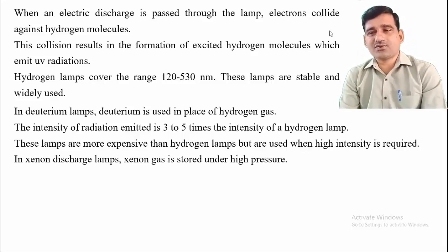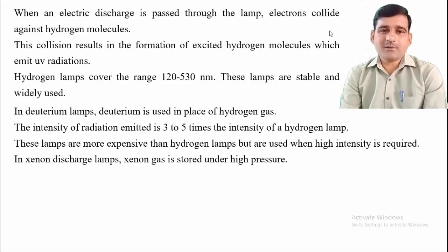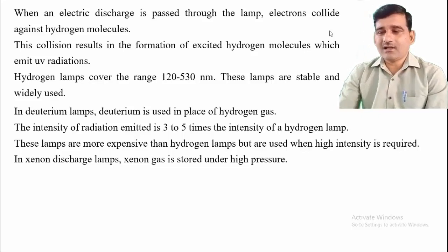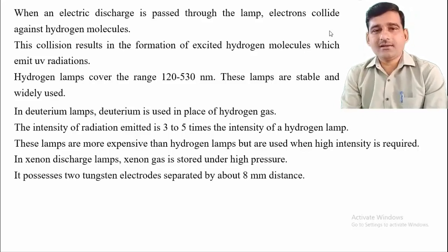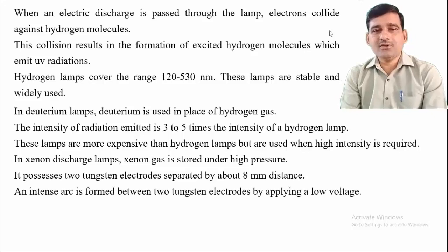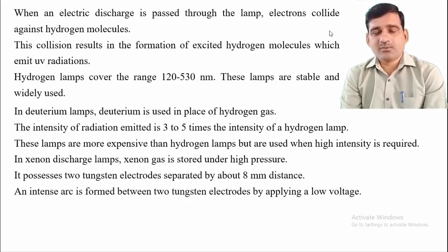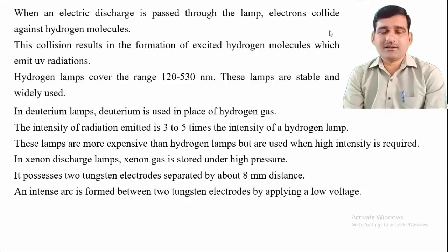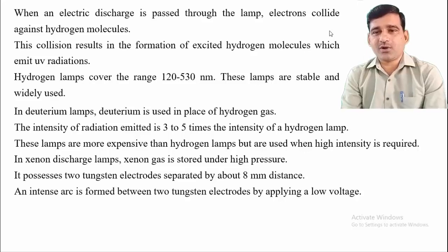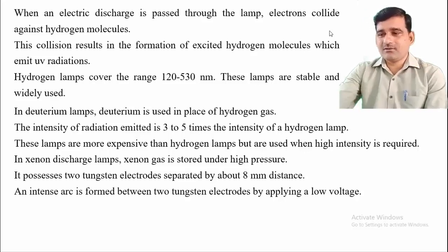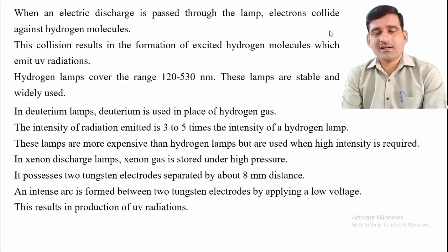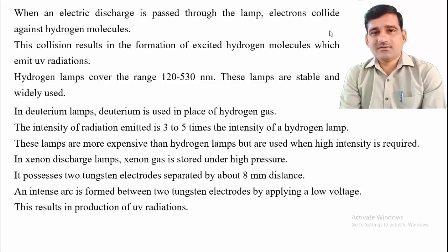In a xenon discharge lamp, xenon gas is stored under high pressure. Collision of electrons with xenon gas causes excitation, producing light in the ultraviolet region. The lamp has two tungsten electrodes separated by 8 mm distance inside an evacuated glass bulb. An intense arc is formed between the two tungsten electrodes by applying low voltage, resulting in the production of ultraviolet radiation.